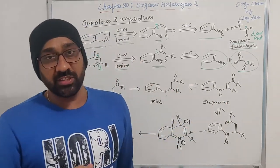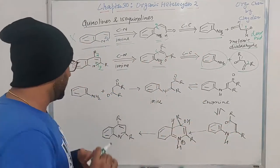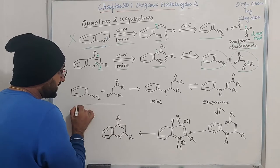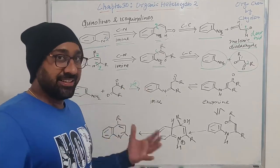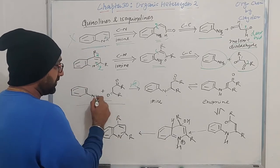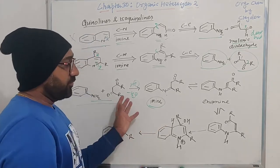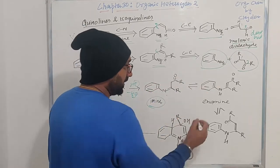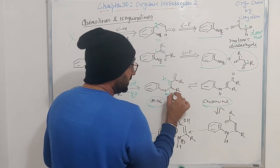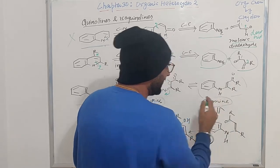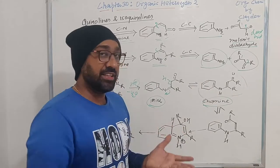Now let's look at the forward synthesis and see what is an issue with even such a disconnect, which looks pretty reasonable. The first step is the formation of an imine, catalyzed in the presence of an acid. Water is ejected out of the system to form an imine. If we draw the other tautomer, which is the enamine, this is the other tautomer — but this is not the correct conformation for cyclization to take place.